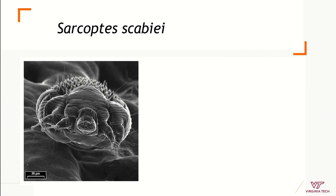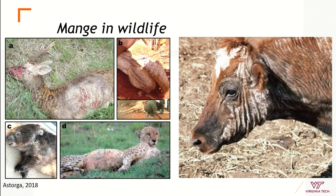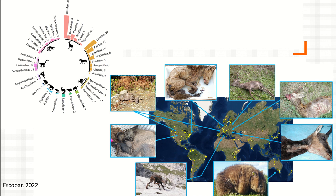Sarcoptes scabiei lives in the skin of animals and can affect livestock, a series of wildlife species — carnivores, herbivores, or marsupials. There are about 150 species of mammals that can be affected, especially from the group of bovids like cattle, followed by carnivores like canids. This parasite can affect many species and many localities; it can be found worldwide, which is why we call it a generalist parasite — it can tolerate many diverse environmental conditions.